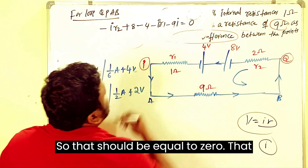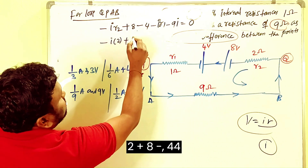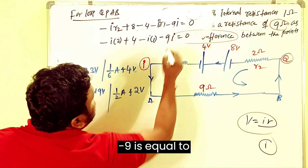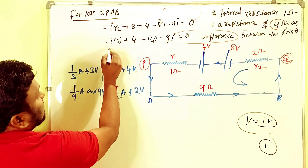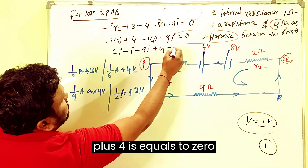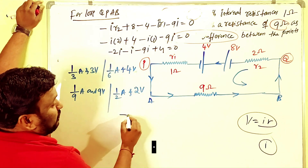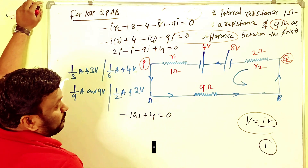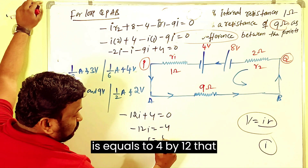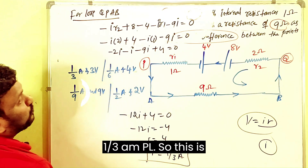Setting the sum equal to zero: minus 2I plus 8 minus 4 minus I minus 9I equals 0, which gives minus 12I plus 4 equals 0. Therefore minus 12I equals minus 4, so I equals 4 divided by 12, which is one-third ampere. So the current in the circuit is one-third ampere.